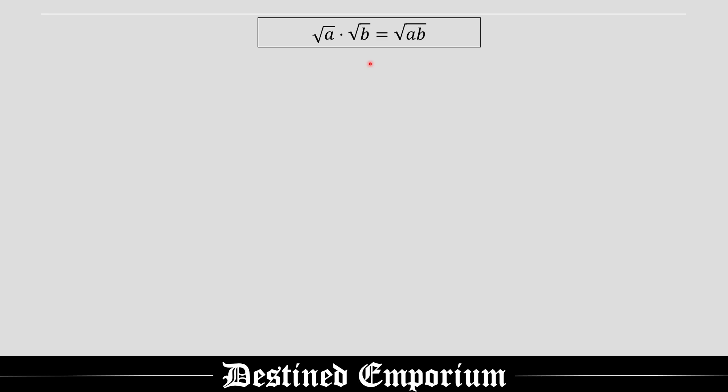Oi lads, it's Danny here today bringing you lot a lovely video. So today we're going to take a look at how to prove this property: square root of a times square root of b is equal to square root of a times b. This is a pretty popular property to know in mathematics. Leave a like and subscribe and let's get right into it.